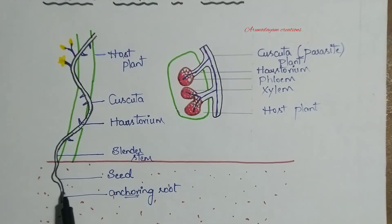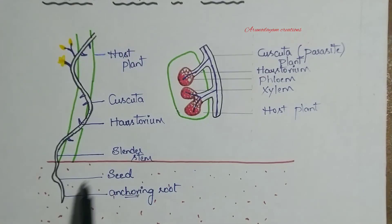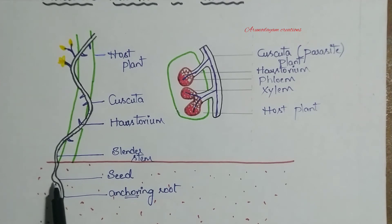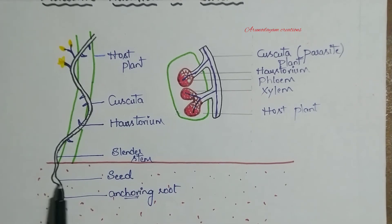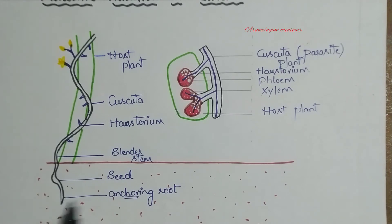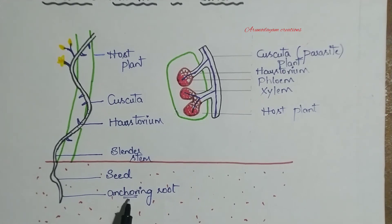When a Cuscuta seed falls onto the soil, during favorable conditions it will germinate. It produces an anchoring root towards the soil, which acts as a supportive root.